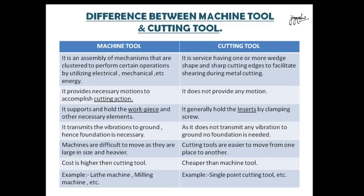The third difference: the machine tool supports and holds the workpiece and other necessary elements such as cutting fluid tubes, cams if it is an automatic single spindle automatic. The cutting tool — generally it is a single point cutting tool — many times uses carbide tips, and other types in which inserts are made or they are soldered, pressed, or held by clamping screw.